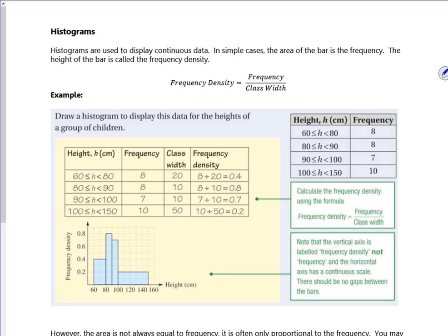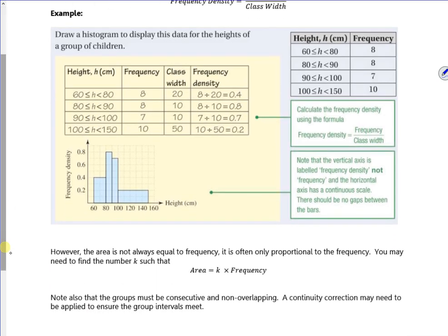Right, so histograms are used to display continuous data. We know that the height is the frequency over the width. And that each block represents the area. The area of the block represents the frequency. So we know that from school. So we've got some data here. So we've got 60 to 80 block. It's got a frequency of 8. So we know that it's 20 wide. So the height is 8 divided by 20, which is 0.4. So that maths works out for us.